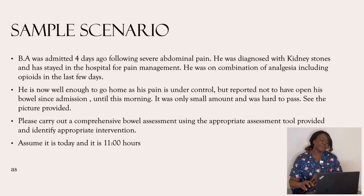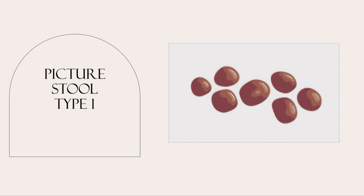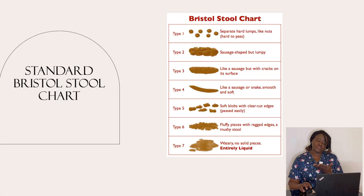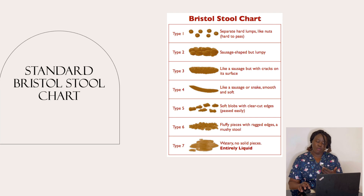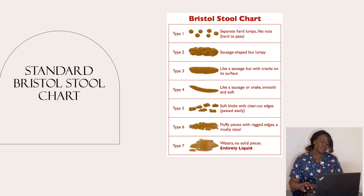Have a look at the picture provided and carry out a comprehensive bowel assessment using the appropriate assessment tool. The sample picture of BA's stool is a type one because you can see there are small, hard bits. You will be provided with the standard Bristol Stool Chart showing types one through seven. Based on the chart, this stool matches type one.